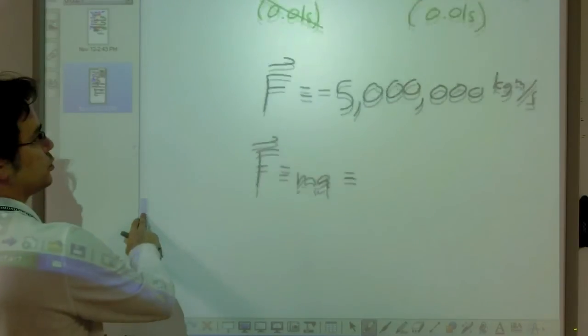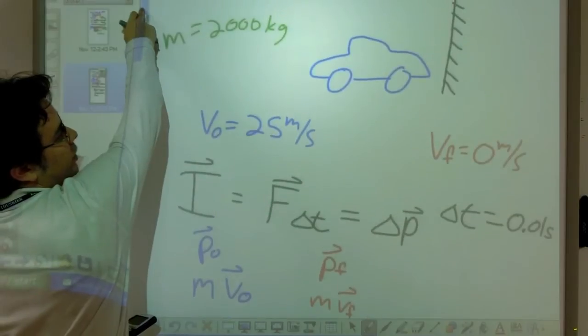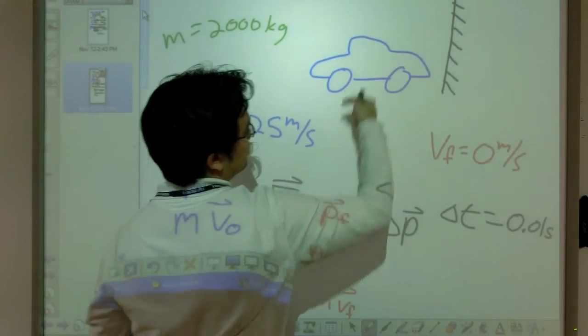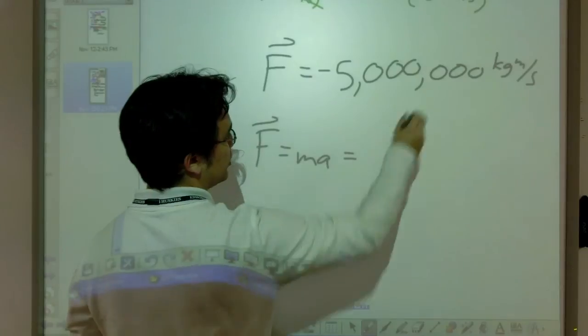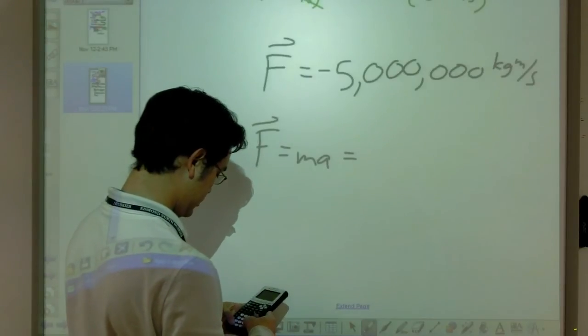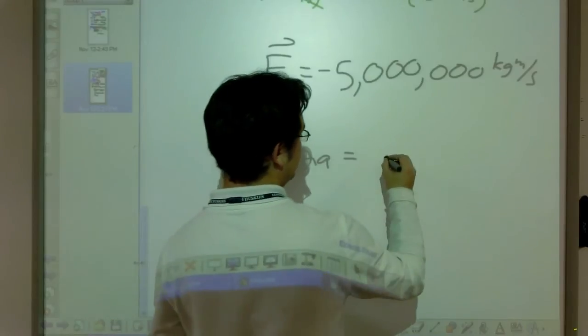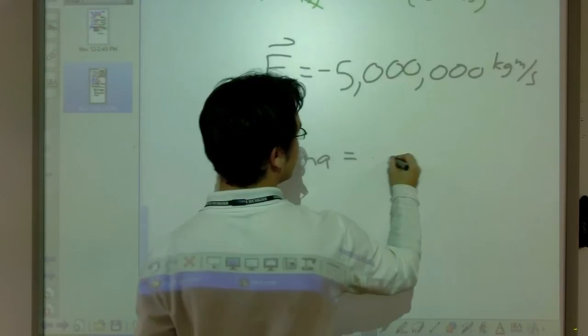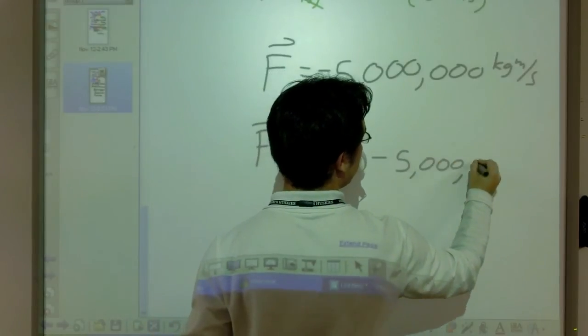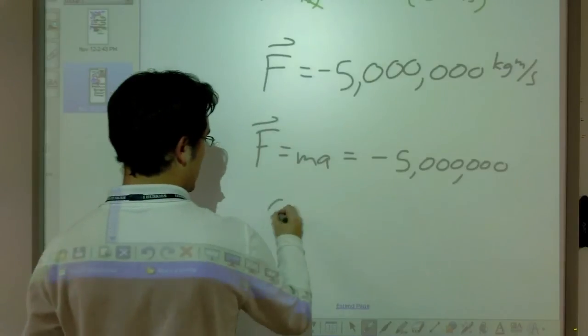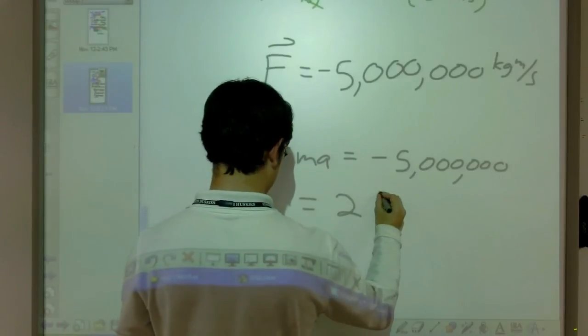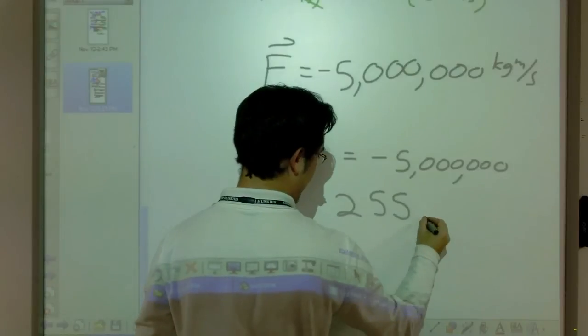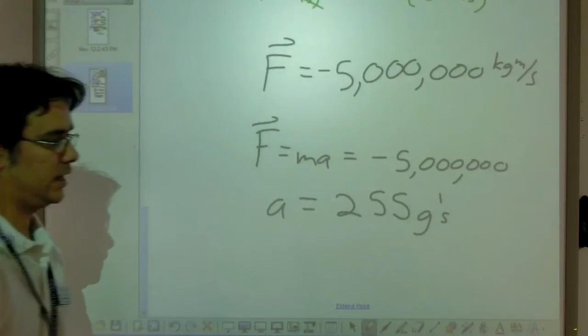When we look back up here, the force applied by the wall when the car slams into it, it's going to be back to the left. So that makes sense. Cool. So if I find my acceleration, which will be this divided by my mass, this comes up to about negative 5 million kilogram meters per second squared. My acceleration in this case is going to be something along the lines of 255 G's. That's a whole lot of force. A whole, whole lot of force. That's double plus ungood.